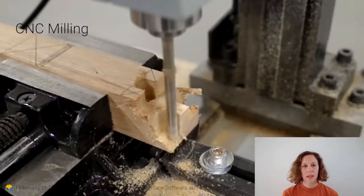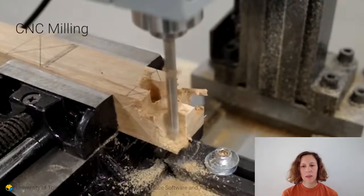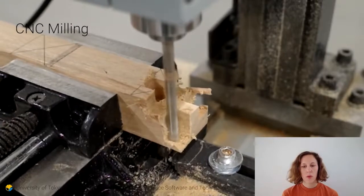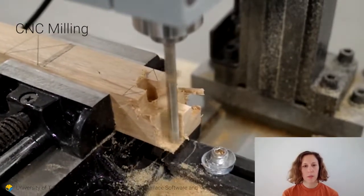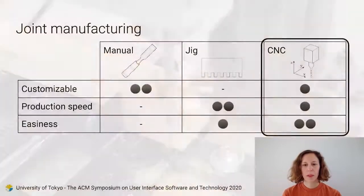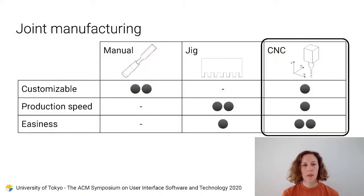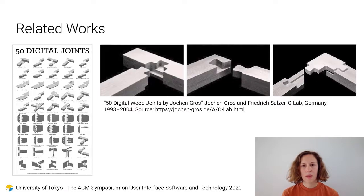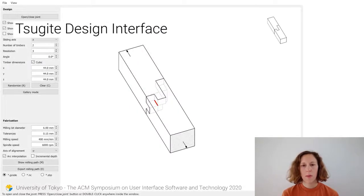Another technique is CNC milling. Basically, you feed x, y and z coordinates from your computer to control a milling bit which moves around accordingly and removes material. CNC milling, which is the fabrication technique that we use for Tsugite, has some geometrical limitations, but it is relatively customizable, fast and easy to use. There are some related works that present joint geometry suited for CNC fabrication. However, these are static 3D models of a limited number of joints. What we propose is a design interface for CNC-compatible joinery.